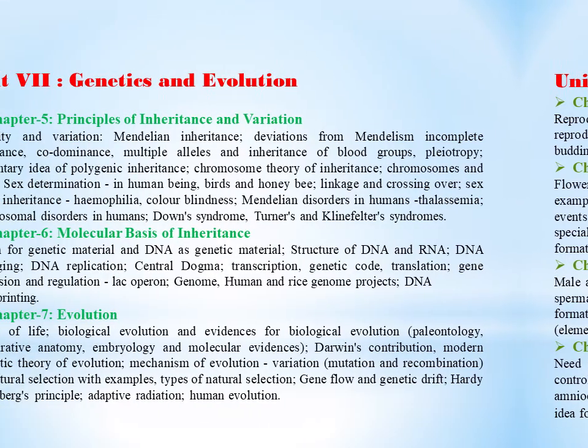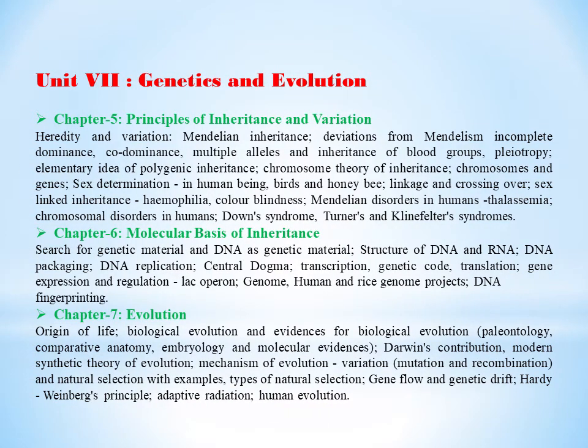Under Unit 7, that is genetics and evolution, it comprises of three chapters. Chapter 5, principles of inheritance and variation.